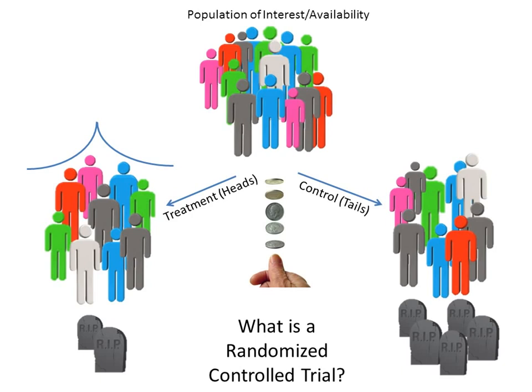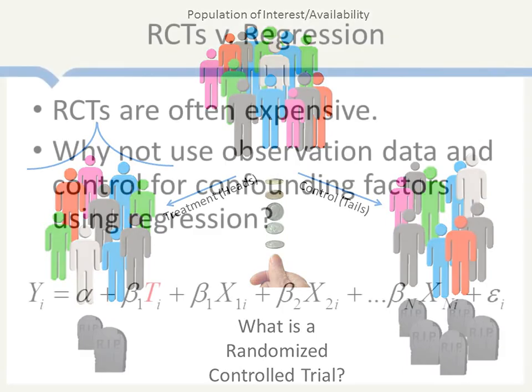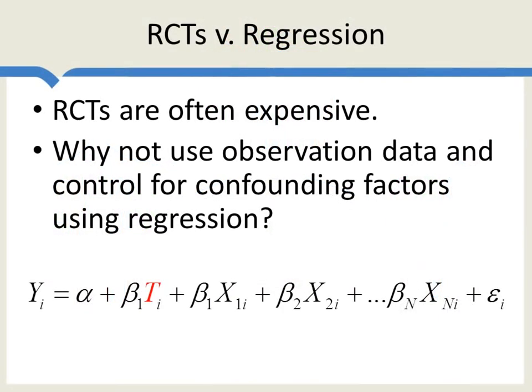Why would we want to do this? Why go to all this trouble? Randomized controlled trials have significant advantages, but they can also be quite expensive, which is one reason why the tradition in most of social science has been to use multivariate regression in an observational study. The idea of an observational study is to take data collected, usually for some other reason — say by the government in the census — and to use statistical techniques to answer your question of interest.